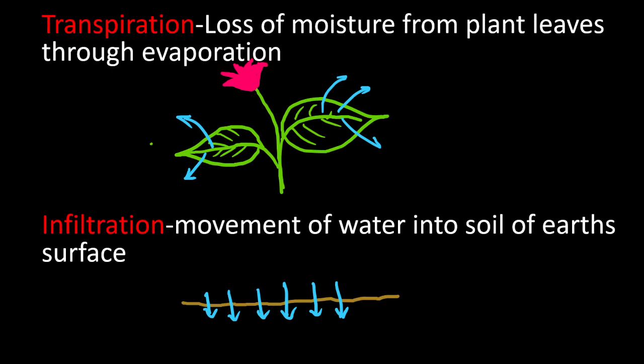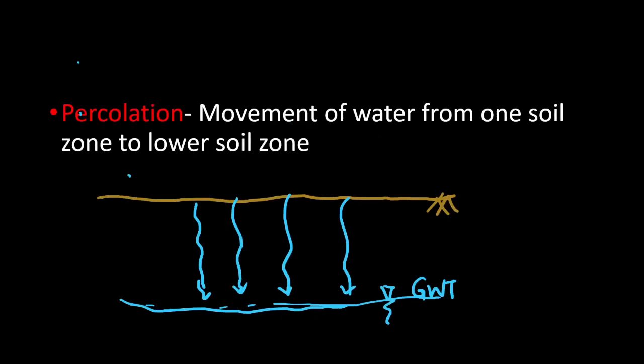The next important term is infiltration. Infiltration refers to the movement of water into the soil, or the initial entry of water into the earth surface. The deep entry of water into the soil is called percolation. So infiltration is the initial entry, whereas percolation is the deep entry.